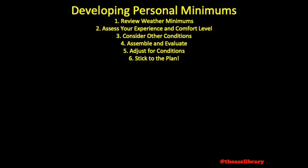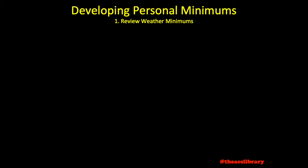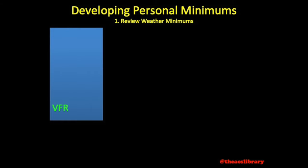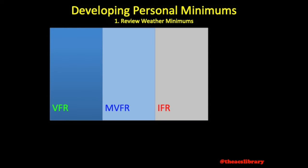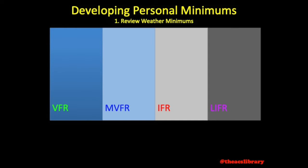To develop personal minimums for yourself, follow these six steps provided by the FAA. Step 1: Review weather minimums. This step simply refers to familiarizing oneself with the VFR, marginal VFR, IFR, and low IFR weather categories.